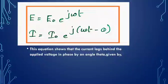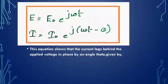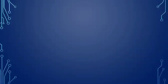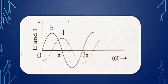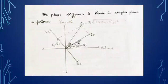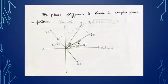The EMF is E = E₀e^(jωt) and the current is I = I₀e^(j(ωt − θ)). This equation shows that the current lags behind the applied voltage in phase by angle θ, where θ = tan⁻¹[(ωL − 1/ωC)/R]. In the graphical and complex plane representation, I₀ and E₀ are plotted with a θ-degree lag from EMF to current. E₀ is the resultant of E_R, (E_L − E_C), giving E₀ = I₀√[R² + (ωL − 1/ωC)²].